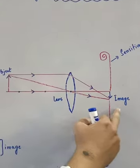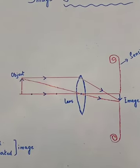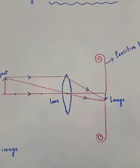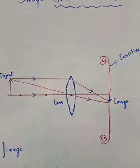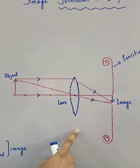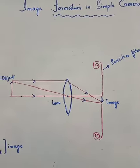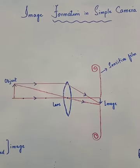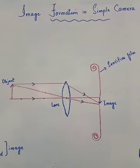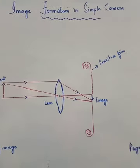The image formed here is real and inverted. Real means it is just like the same as the object is there. Inverted means it can be upright or downsized. The image is real. The image formed in a simple camera is real and inverted.